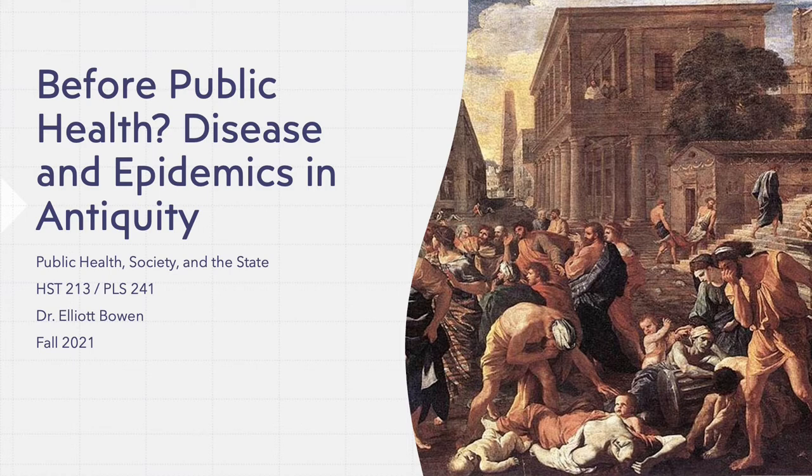We've learned that in order to understand public health, we need to examine it in connection with things like the rise of the modern state, the political interactions of governments and citizens, and questions of power, authority, and control. On a practical level, what this means is that public health has not always been guided purely by health-related concerns. There's nothing natural or inevitable about public health. Far from being an automatic response to the spread of infectious disease, initiatives to protect the health of populations have historically been contingent on a whole host of other things.